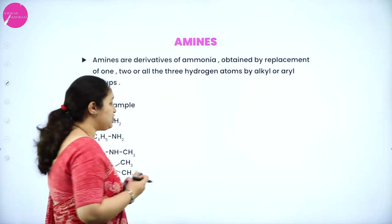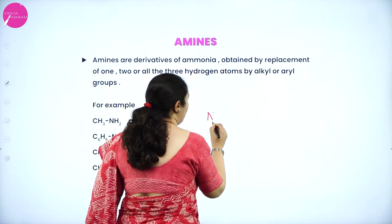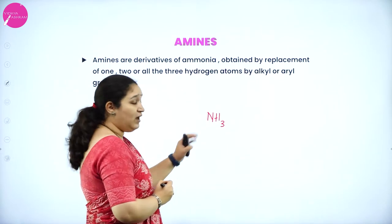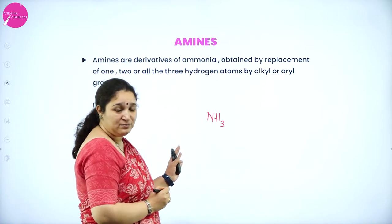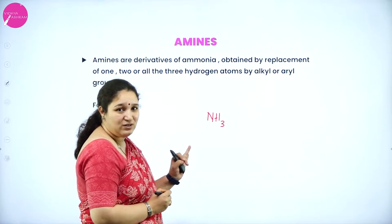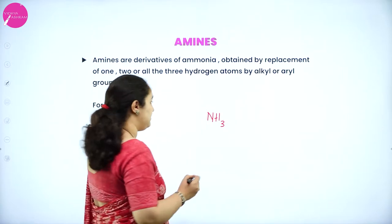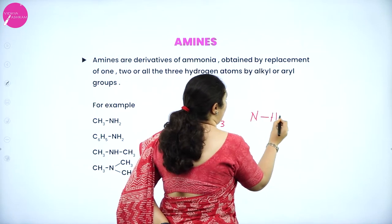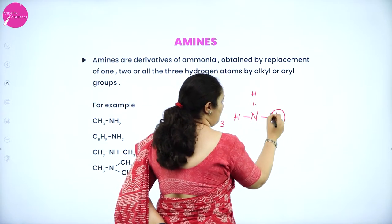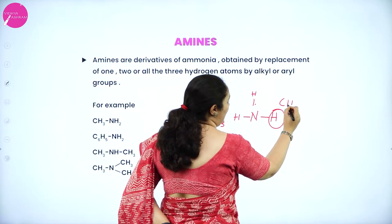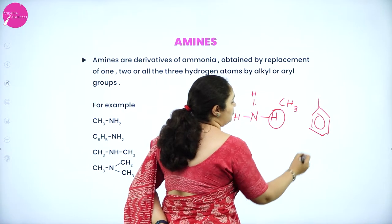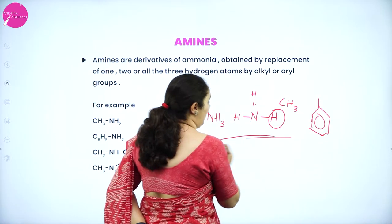We know NH3 is called as ammonia. In ammonia, if the hydrogen atom is substituted with alkyl or aryl groups, we get amines. We know that ammonia is NH3, so instead of one hydrogen, if we put any alkyl group — or it can be even a benzene ring, that is the aryl group — if we add, we get amines.